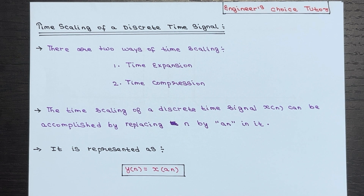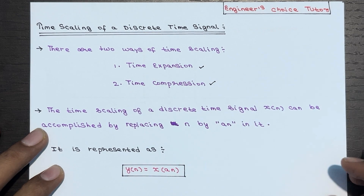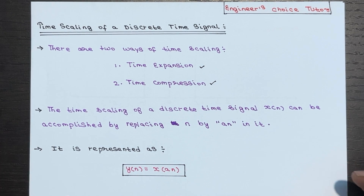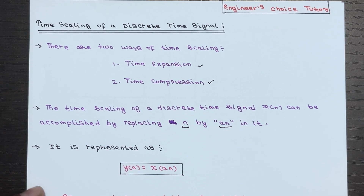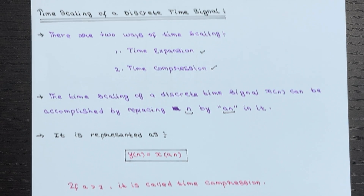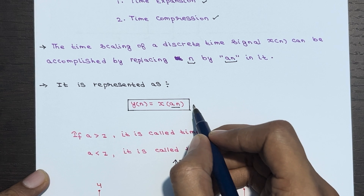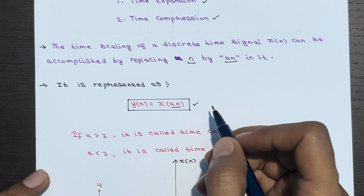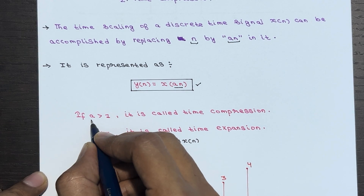Today we are going to talk about time scaling of discrete time signals. Time scaling can either be time expansion or time compression. To achieve time scaling of a discrete time signal X of n, we simply replace n by a·n. Mathematically this can be expressed as y(n) = X(a·n). This is how we represent time scaling of a discrete time signal.